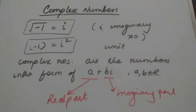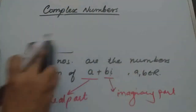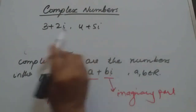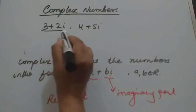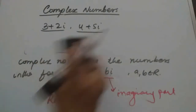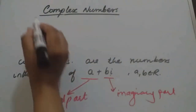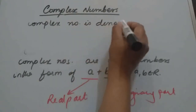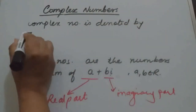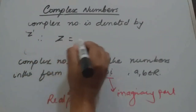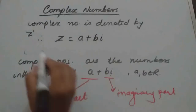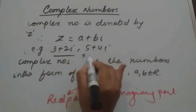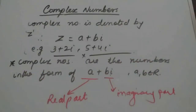Examples of complex numbers: 3 plus 2i, 4 plus 5i, where 3 and 2 belong to the real numbers. A complex number is denoted by z. So z equals a plus bi. For example, 3 plus 2i, 5 plus 4i — this is the definition of a complex number.